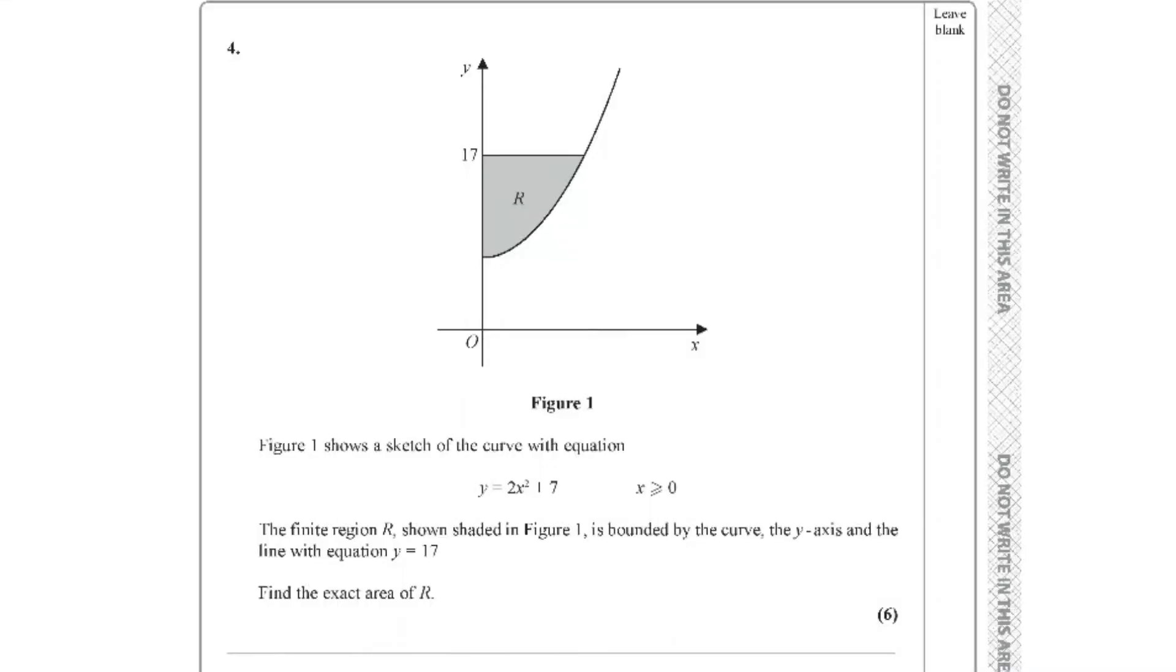Question number 4. We are given a figure and a function y equals 2x squared plus 7, where x is apparently positive, greater than or equal to 0. The finite region shown shaded in Figure 1 is bounded by the curve, y-axis, and the line with equation y equals 17. Find the exact area of R. The question has 6 marks.